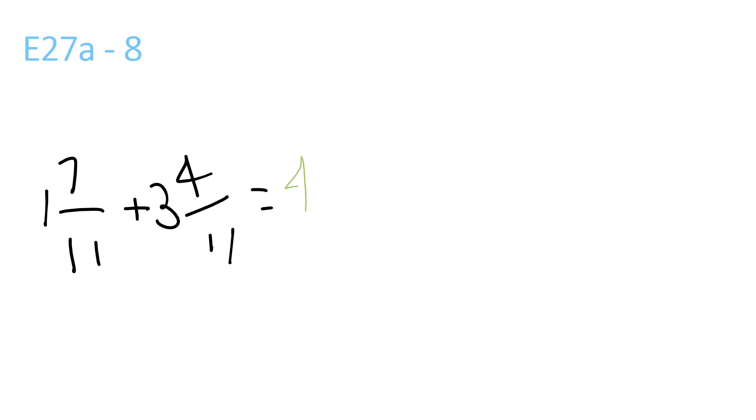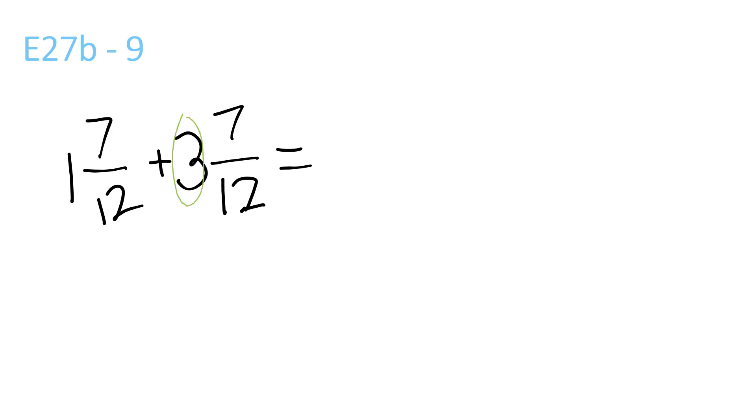1 plus 3 equals 4, and the fraction parts equal 11 over 11, which equals 1. Then 1 plus 4 is 5. For this one, 3 plus 1 is 4. 7 plus 7 is 14 over 12, which equals 5 and 2 over 12, which can be simplified to 5 and 1 sixth.